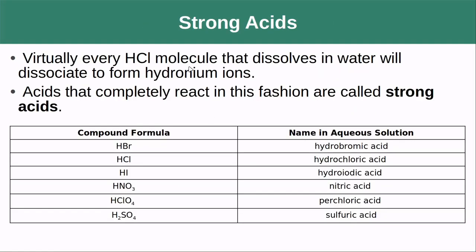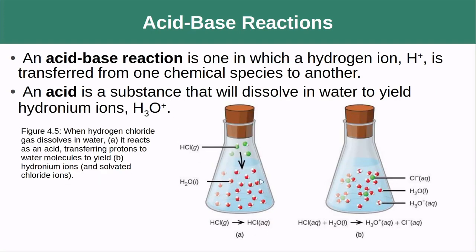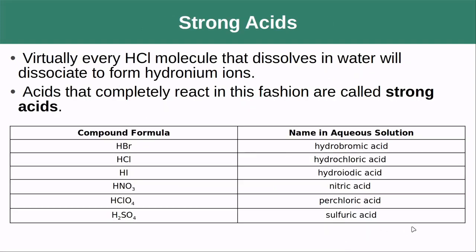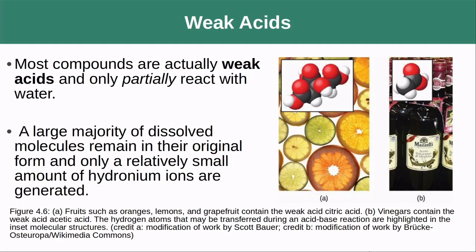When we do this with hydrochloric acid, virtually every HCl molecule is going to dissolve — none are going to stay in the water solution without undergoing that reaction. Acids that react completely in this way are called strong acids. Here we have a list of various strong acids — pretty much any acid made from a halide is going to be a strong acid, as well as many polyatomic acids. That is not the rule by any means, though.